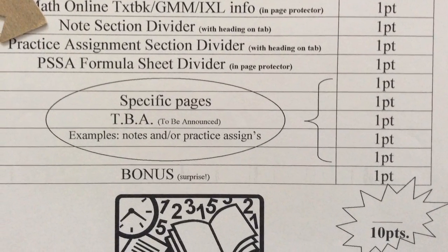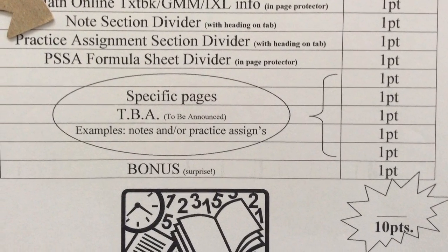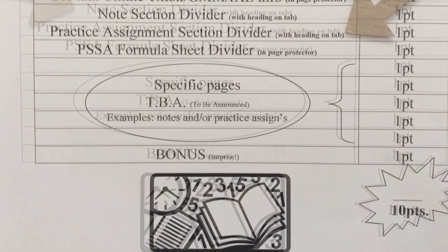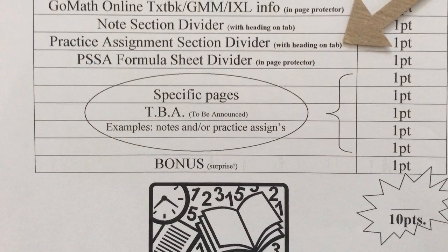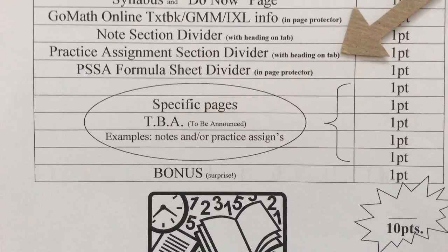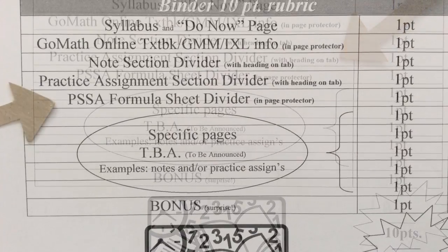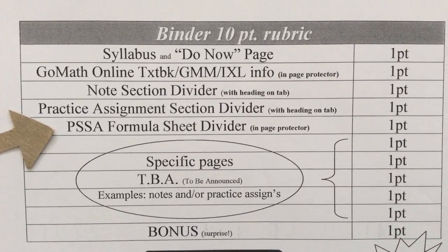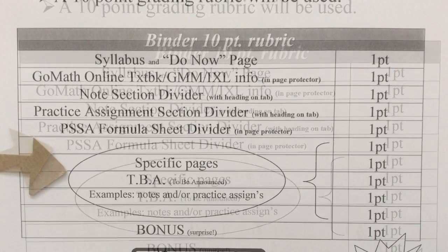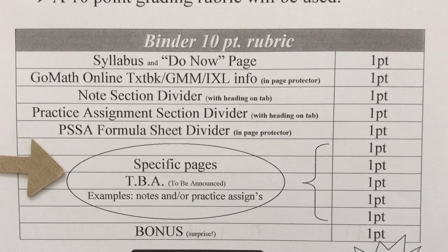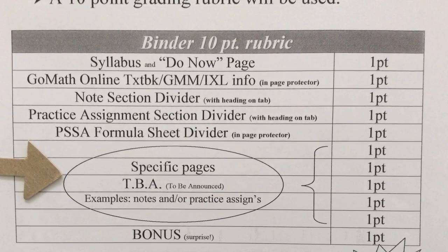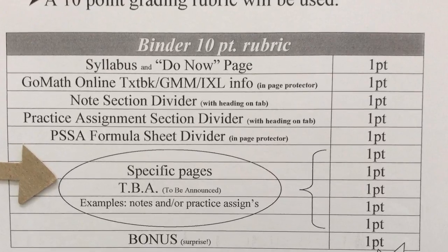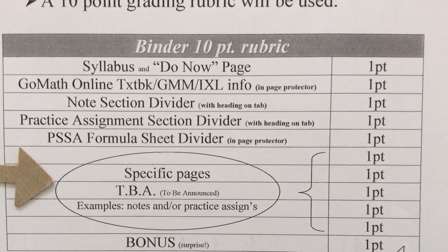All this information will be followed by your Notes section divider and your Notes, then your Practice Assignment section divider with your Practice Assignments, and then the PSSA formula sheet divider with any PSSA testing information you'll be getting throughout the year. When we do binder checks, we'll also be looking to see if you have the notes in order and any other information in the proper places in your binder.